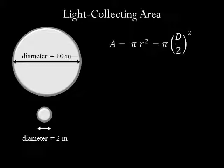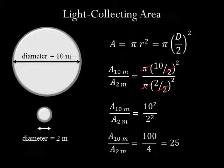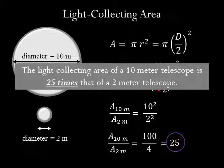The area of a circle is equal to pi times the radius of the circle squared. If we want to compare the light collecting area of the 10-meter scope to the 2-meter scope, we can take the ratio of their areas. The area of the 10-meter over the 2-meter is found to be 25. This means the light collecting area of a 10-meter telescope is 25 times that of a 2-meter telescope. The largest telescopes currently in use have a diameter of about 10 meters.